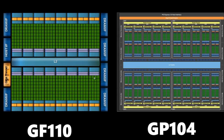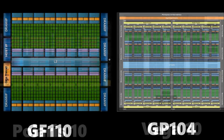Now looking at something like the Fermi GF110 compared to the GP104 — granted these are not the exact same images — but you can clearly see the giga thread versus this overarching engine is significantly different. That's just the easiest thing to visually see; there are many other differences, but you can clearly see from this diagram that this is a difference in architecture. These are two completely different architectures, so they run differently.